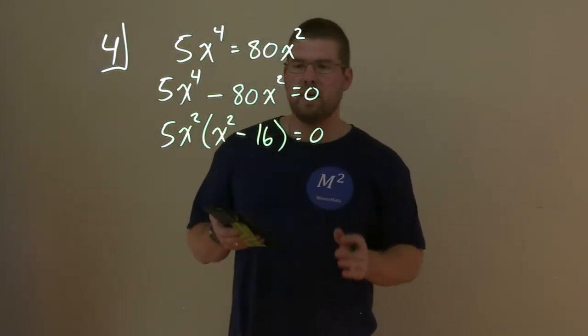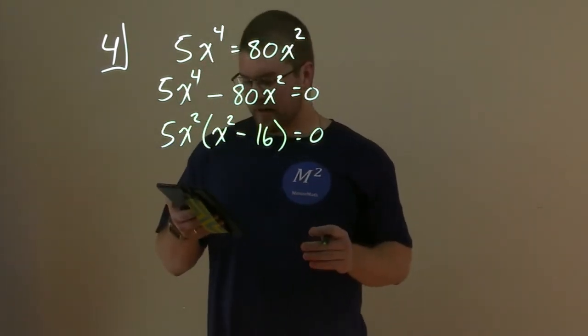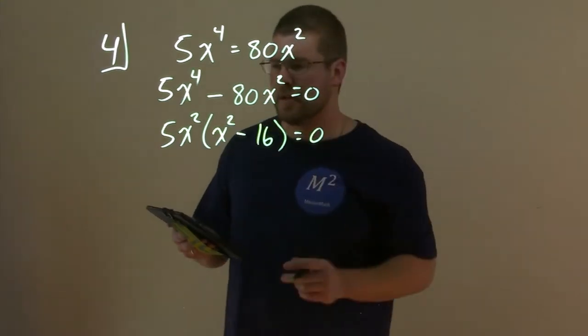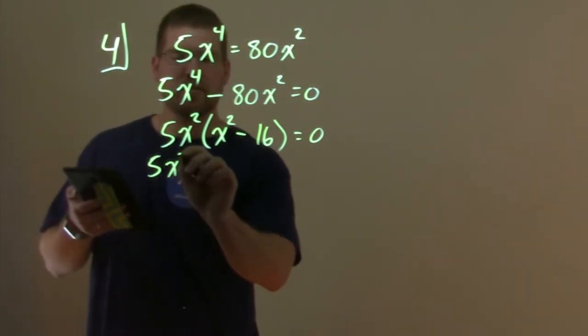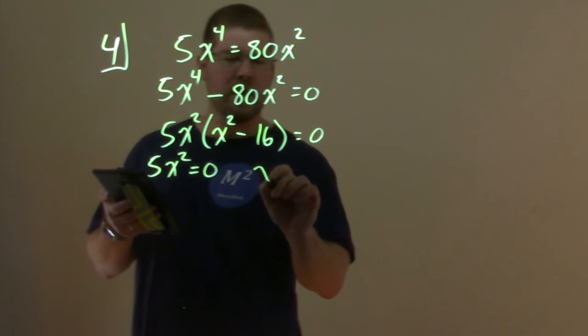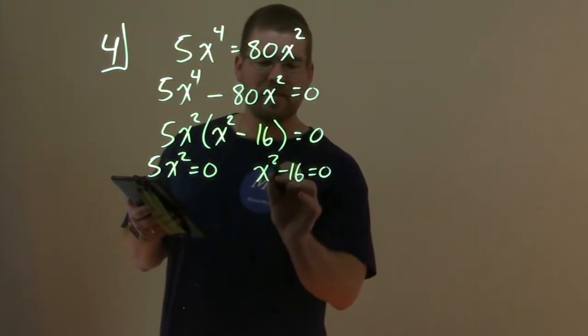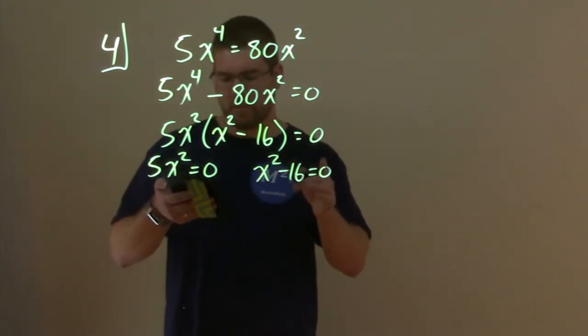And that equals 0. Alright, so now we have two parts that are being multiplied. We can set both of them equal to 0. 5x^2 = 0. x^2 - 16 = 0. Having some fun, I hope you are.